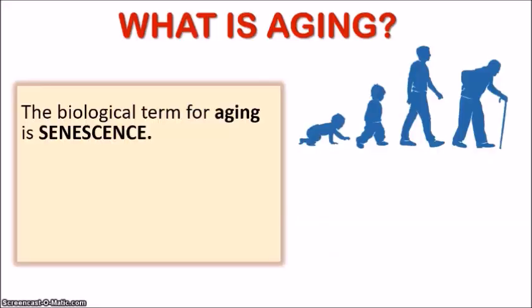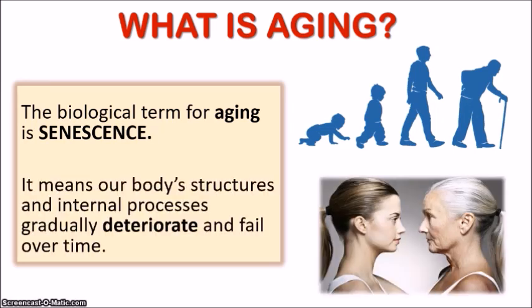So what is aging? The biological term for aging is senescence, and that simply means that our body structures and internal processes are going to gradually deteriorate and fail over time. This is what leads to the obvious signs of wrinkled skin, graying hair, reduced energy and strength, plus an increased susceptibility to injury and disease.